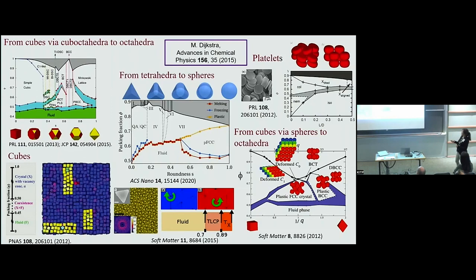Often the phase diagrams are plotted as a function of a shape parameter, going from cubes through cuboctahedra to octahedra, with the packing fraction along the y-axis — which is the only control parameter in these hard particle systems.